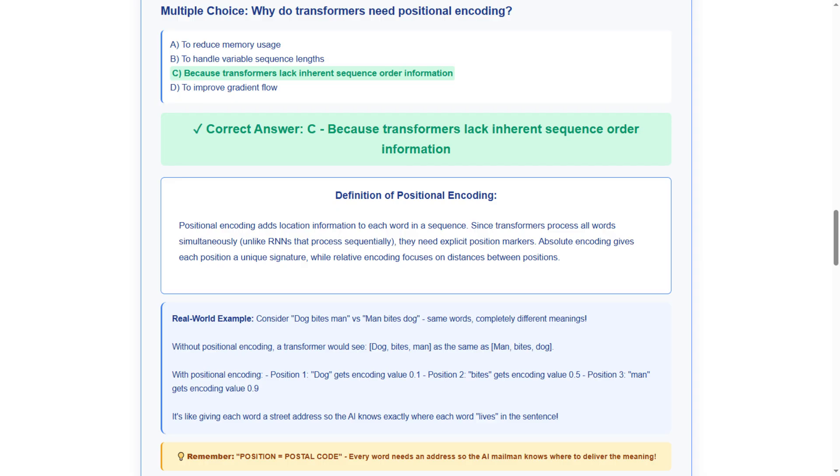Why do transformers need positional encoding? Option A, to reduce memory usage. Option B, to handle variable sequence lengths. Option C, because transformers lack inherent sequence order information. Option D, to improve gradient flow.